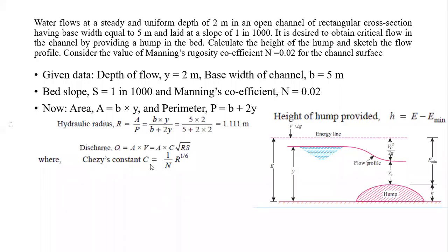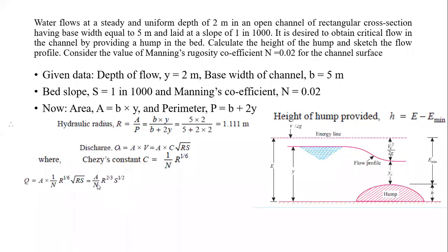In Manning's equation, there is a relation where the Chezy coefficient C equals (1/n) × R^(1/6). We can use Manning's equation directly. From that, the discharge Q equals area A multiplied by velocity, where velocity is (1/n) × R^(1/6) × √(RS). The relation becomes Q = (A/n) × R^(2/3) × S^(1/2).